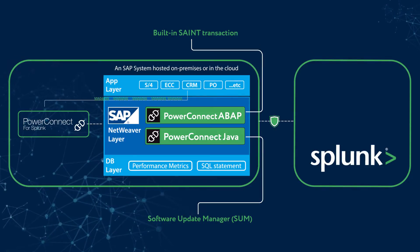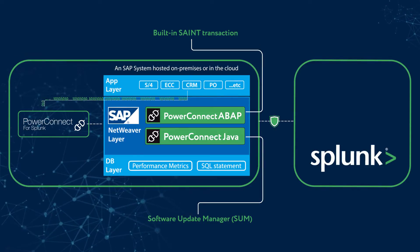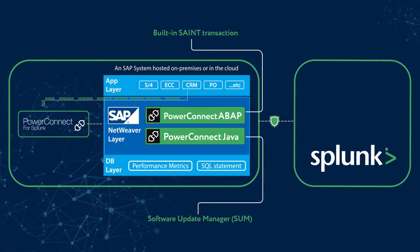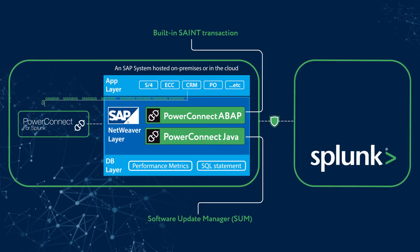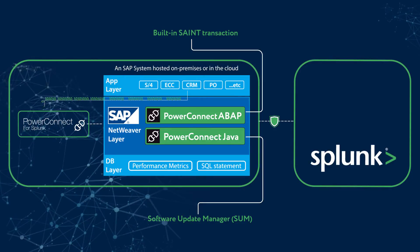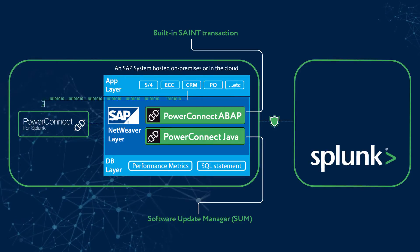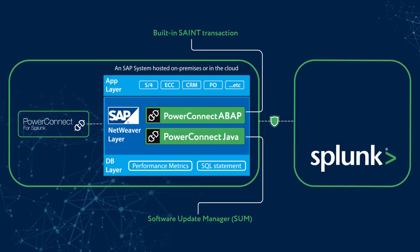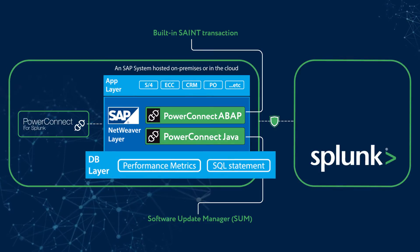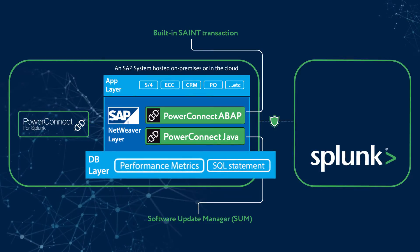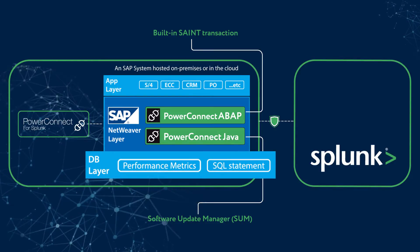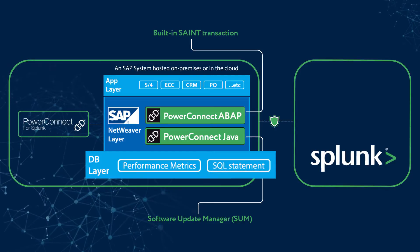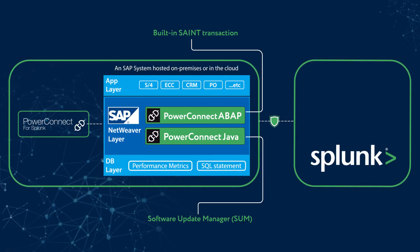Once installed, PowerConnect has access to over 10,000 SAP data elements using 250 out-of-the-box dataset extractors that facilitate visibility into the database layer, including disk and performance metrics from the DBA cockpit, as well as details about the SQL statements being executed.